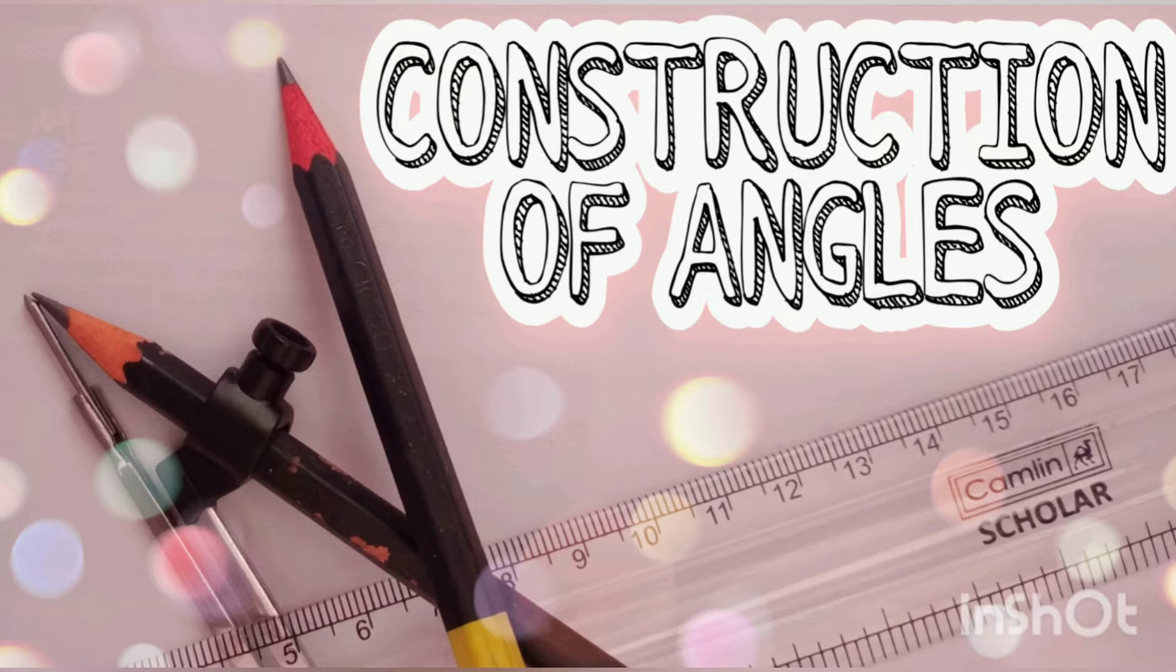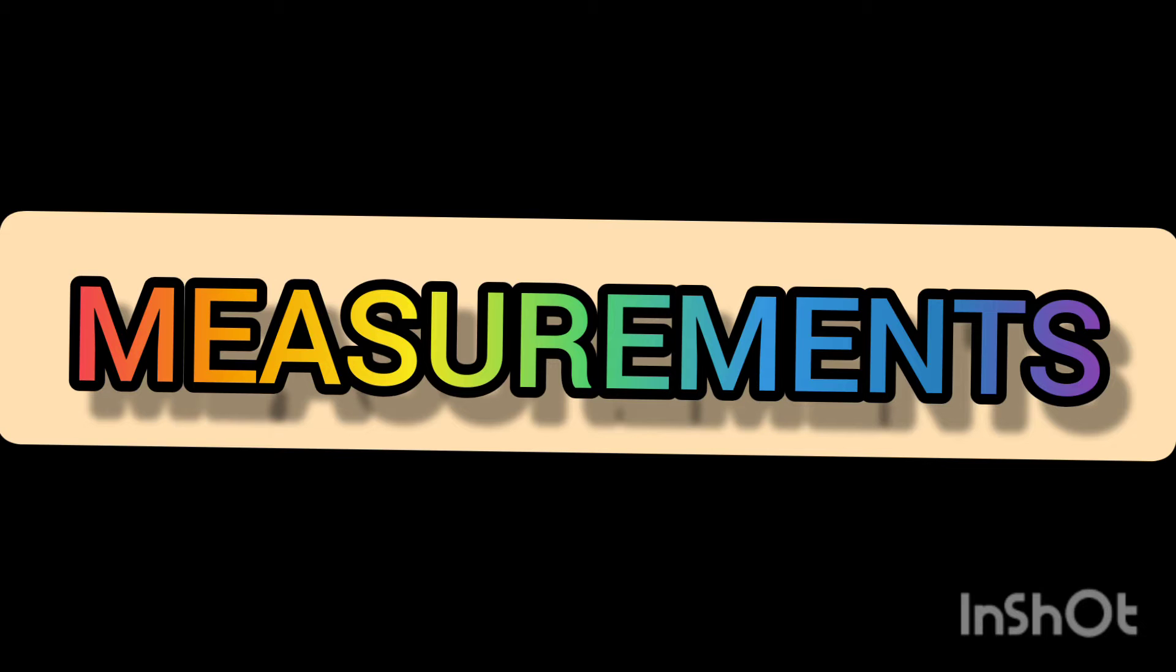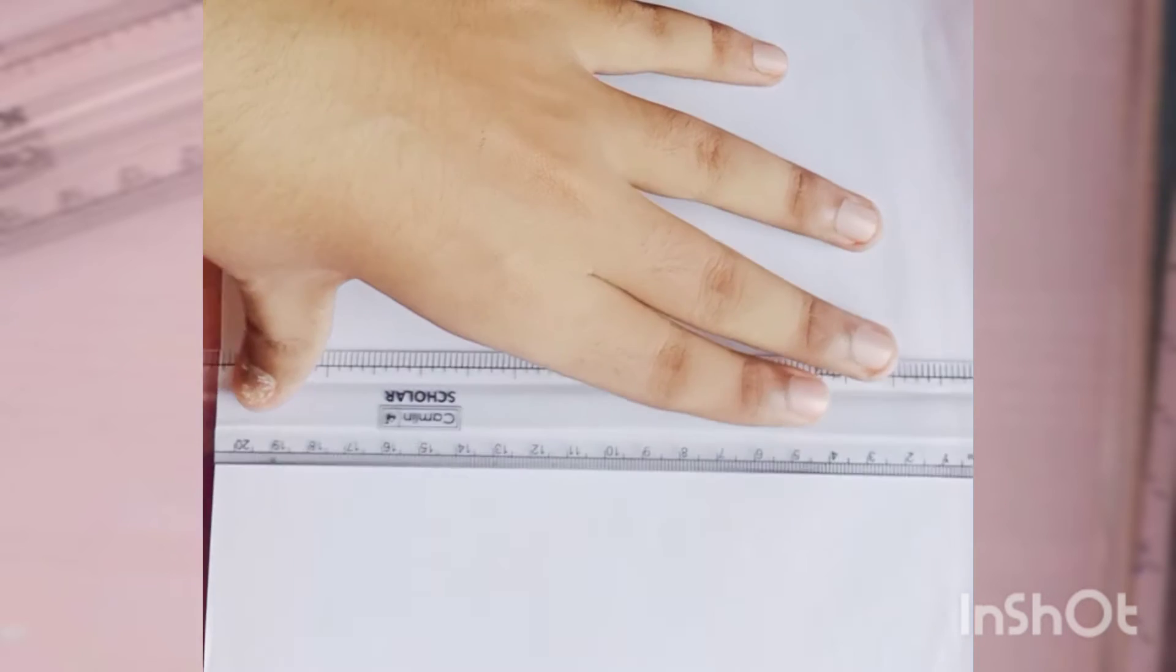90 degree using pencil and compass. Measurements for all angles should be same. So guys, to make the angle of 75 degree, we have to first make a line